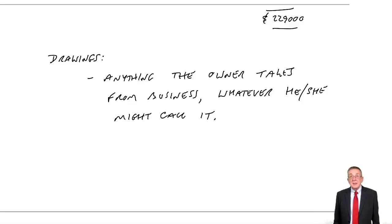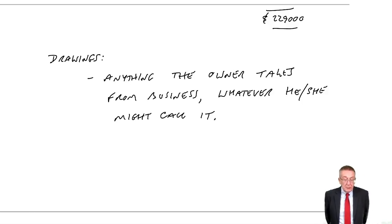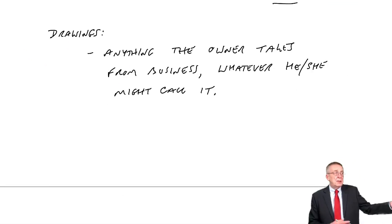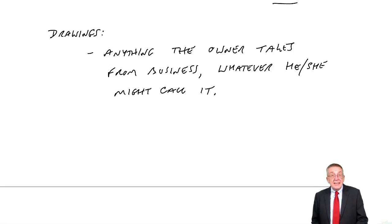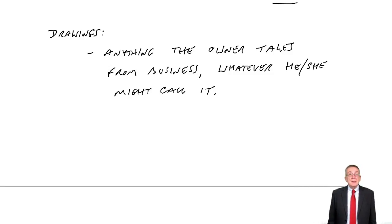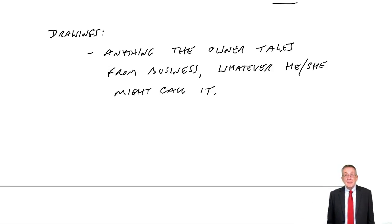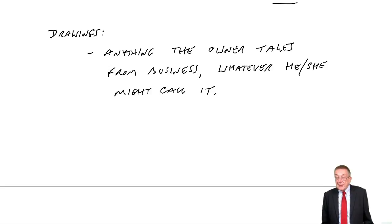First of all, when I say anything the owner takes from the business, usually it will be cash. The owner needs money to live on, so he's likely to take out money. In this illustration he took out 10,000. But it is anything the owner takes. So for instance, if my business is buying and selling DVDs and the business has bought some DVDs, but I decide to take some of them home — well, that is drawings. The cost of those DVDs I take is drawings.